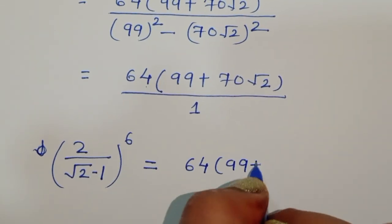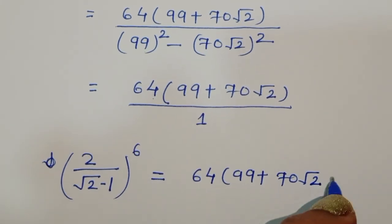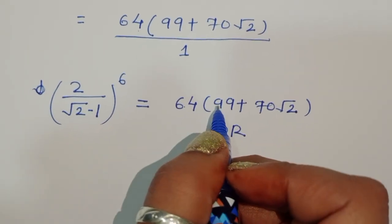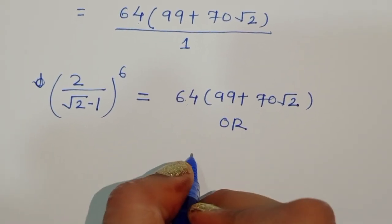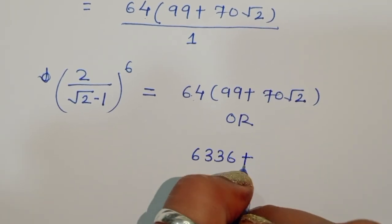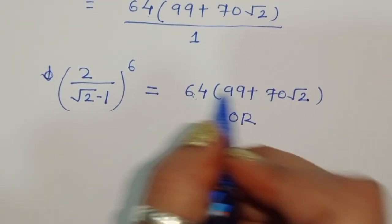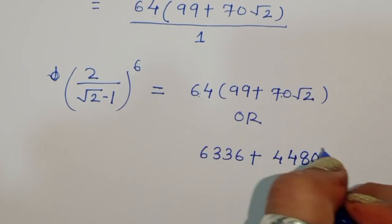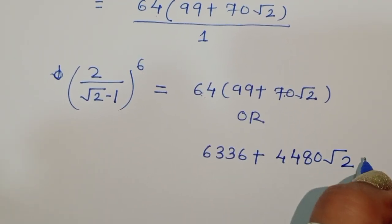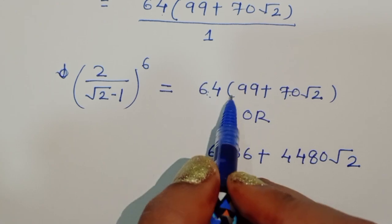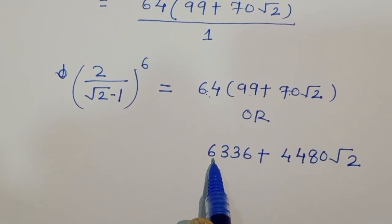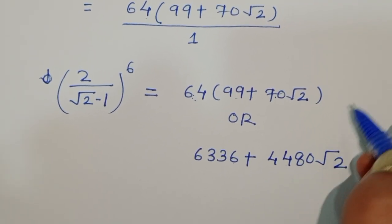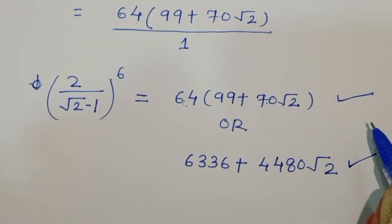Therefore the answer is 64 times (99 plus 70 square root of 2). Expanding: 64 times 99 equals 6336, and 64 times 70 square root of 2 equals 4480 square root of 2. So the final answer is 64 times (99 plus 70 square root of 2), or equivalently 6336 plus 4480 square root of 2.